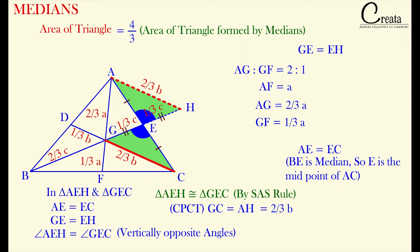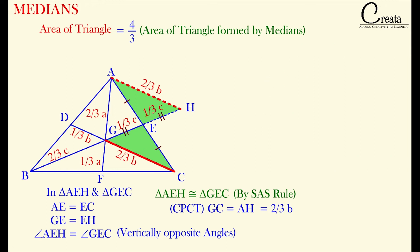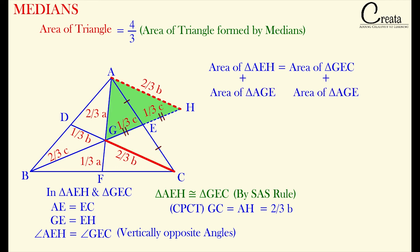For those who have still not completed congruency and similarity, those students should complete those topics before coming to this topic. After understanding the fundamentals of congruency only, you will be able to further understand the concept of this chapter. Moving further, we have just proved both of these triangles are congruent to each other, meaning they are exactly matching each other, which further means that the area of both of these triangles are equal to each other.